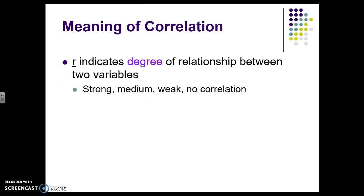The R, again, is the degree of relationship between the two variables. So based on this R value, we can say strong, medium, weak, moderate, weak, no correlation. And we can also assess direction. So is it positive? Is it negative?